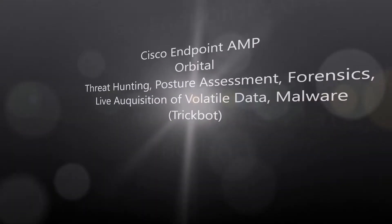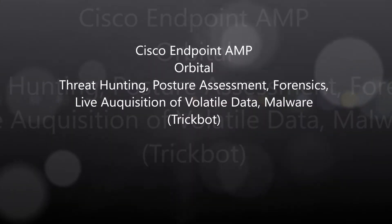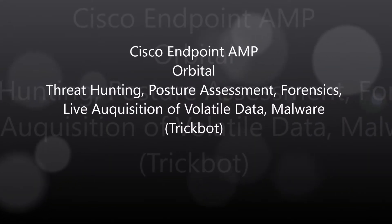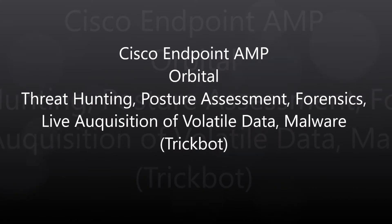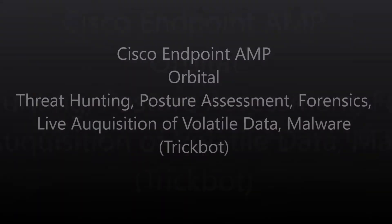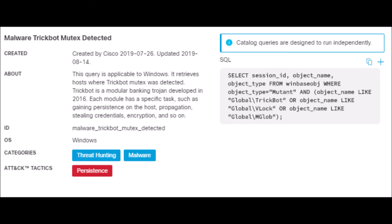Cisco Endpoint AMP, Orbital — we're going to look for TrickBot malware in our environment, and this is a mutex. We're going to search for a specific mutant called Global slash TrickBot or VLock or mGlob.